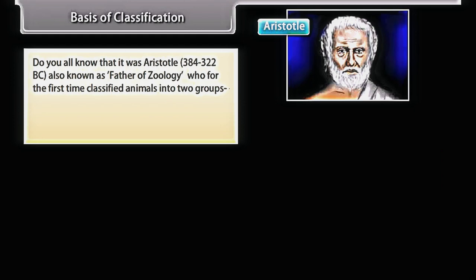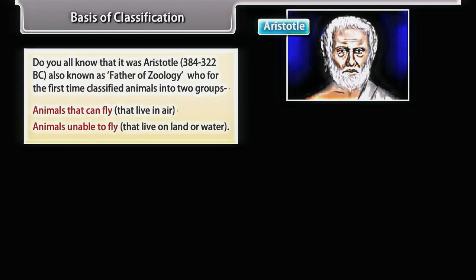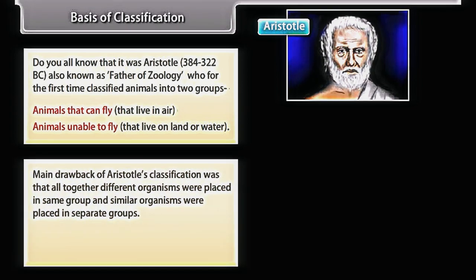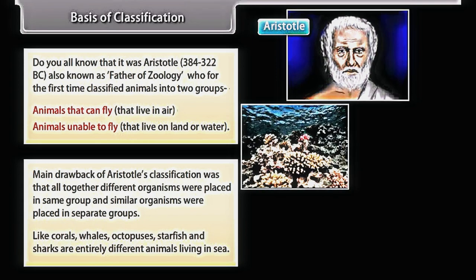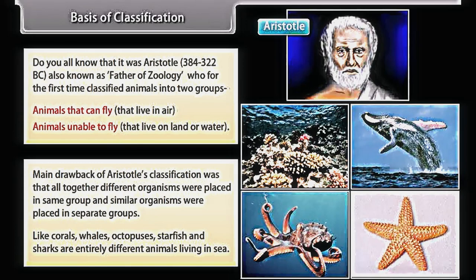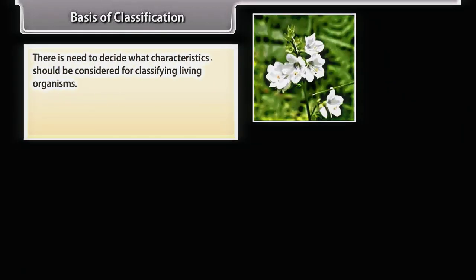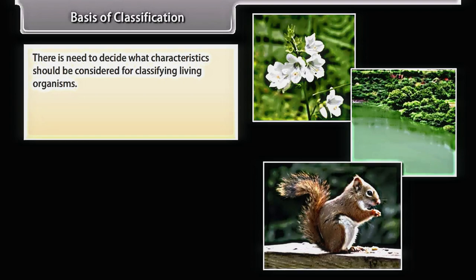Aristotle (384–322 BC), also known as the father of zoology, for the first time classified animals into two groups: animals that can fly and live in air, and animals unable to fly that live on land or water. The main drawback was that altogether different organisms were placed in the same group — like corals, whales, octopuses, starfish, and sharks are entirely different animals living in the sea. So there is need to decide what characteristics should be considered for classifying living organisms.